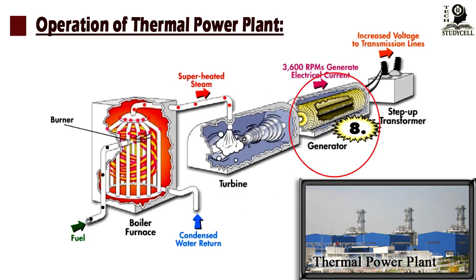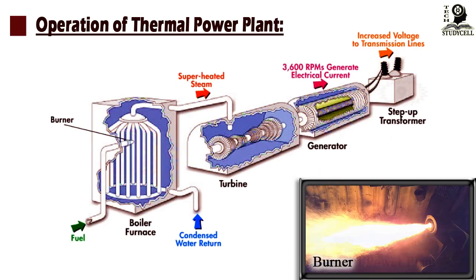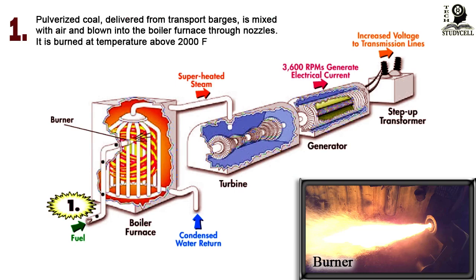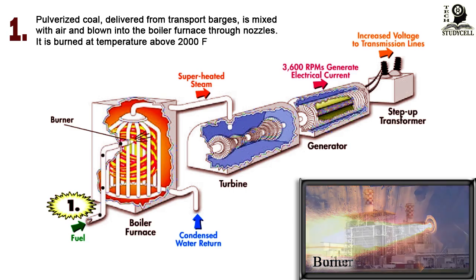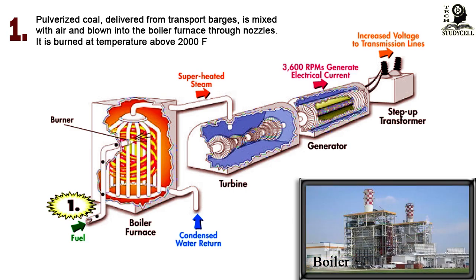Pulverized coal delivered from transport barges is mixed with air and blown into the boiler furnace through nozzles. It is burned at temperatures above 2,000 degrees Fahrenheit.